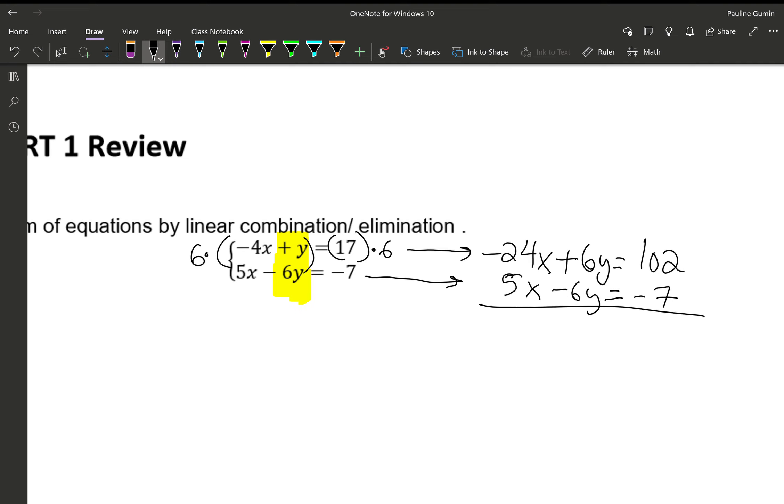And hopefully you can see why I'm doing that. The Y's will cancel. Now, if you were doing the X's, I would multiply the top by 5, the bottom by 4. You'll still get the same answer. Negative 24X's plus 5X's is negative 19X. I forgot to cross these off. 102 plus negative 7 is 95. And let's finish finding X by dividing on both sides by negative 19. X equals negative 5.